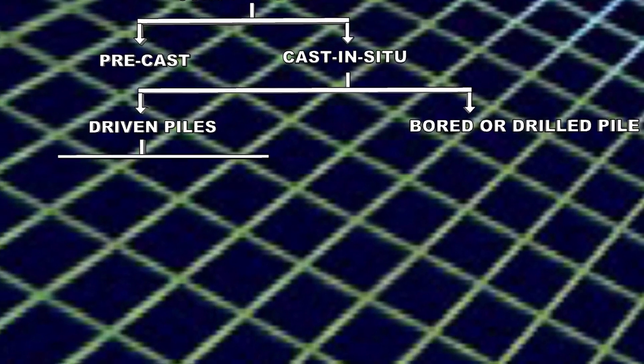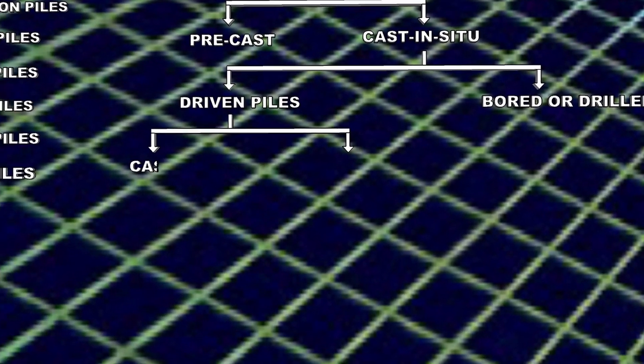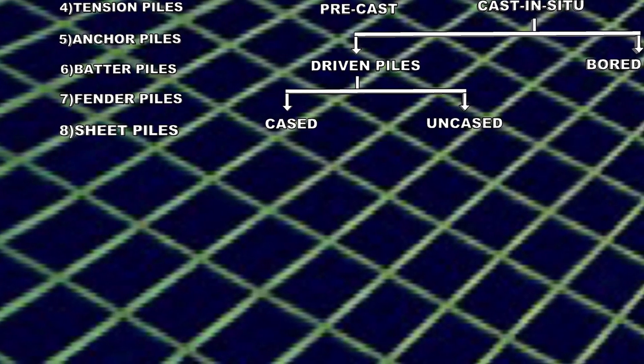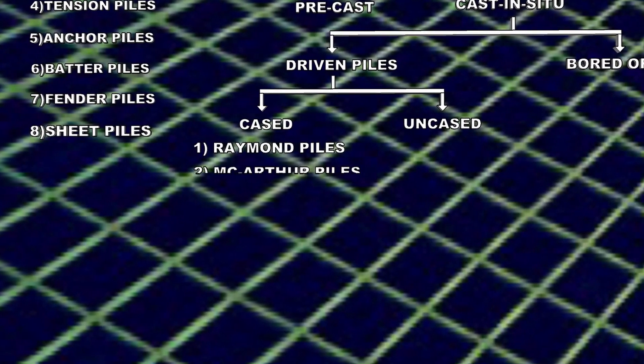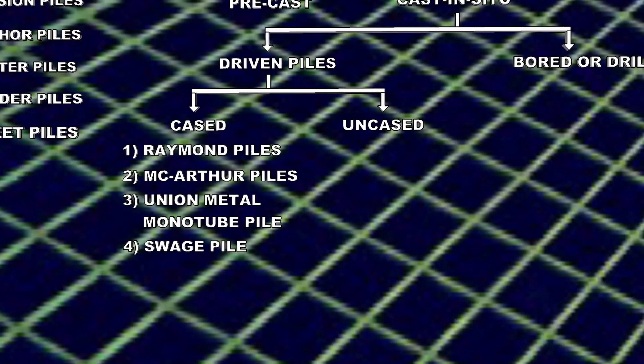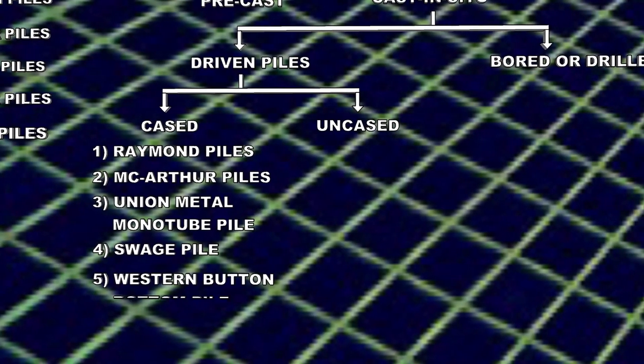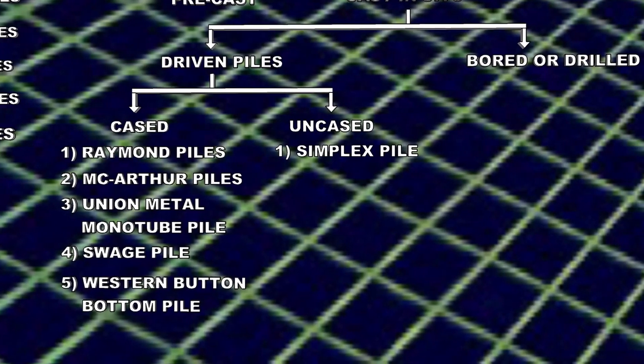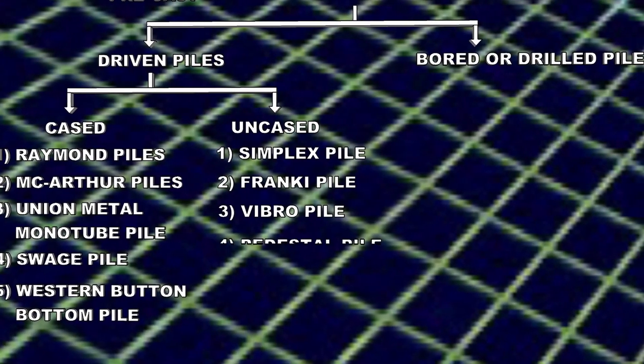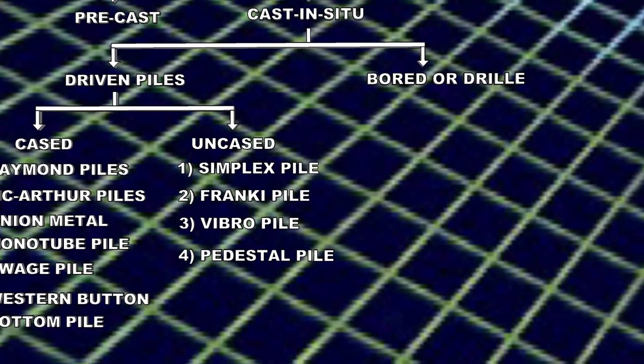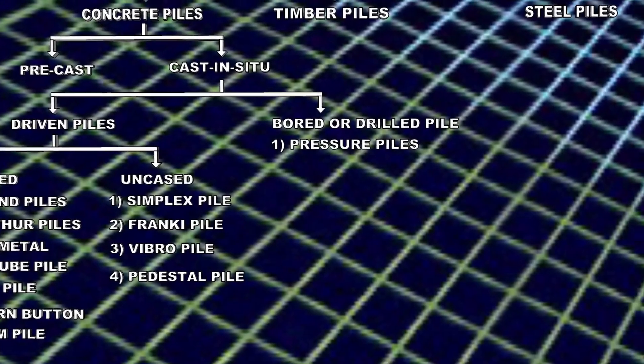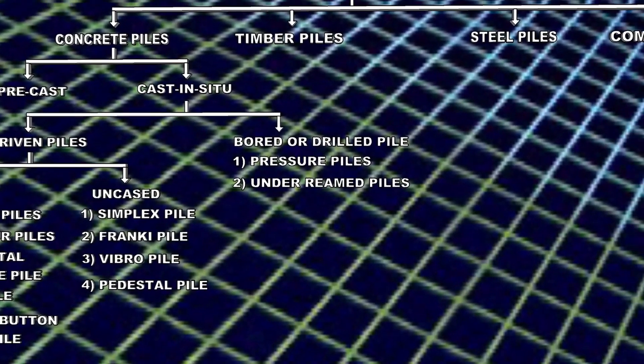Driven piles can be cased pile or uncased piles. Cased piles are Raymond piles, Macarthur piles, Union Metal Monotube piles, SWAG piles, and Western button bottom piles. Uncased piles are Simplex pile, Frankie pile, Vibro pile, and pedestal piles. Bored or drilled piles are pressure piles, under-ream piles, and bored compaction piles.